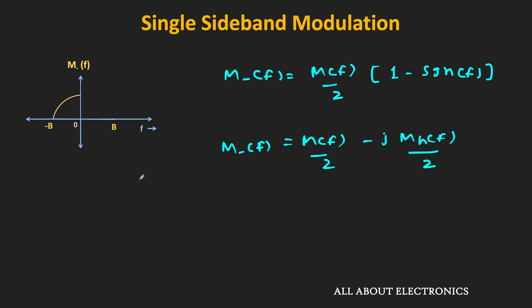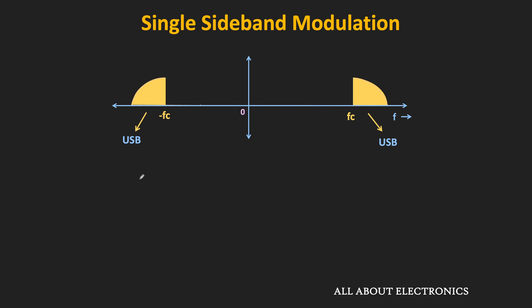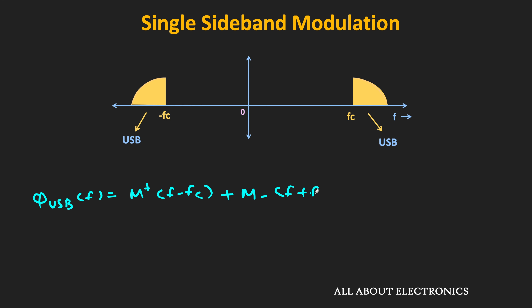Now with M+(f) and M−(f), let us represent the SSB signal. Considering upper sideband (USB) modulation: the positive side of the USB signal is M+(f) shifted by fc, and the negative side is M−(f) shifted by −fc. So the USB signal is: USB(f) = M+(f − fc) + M−(f + fc).